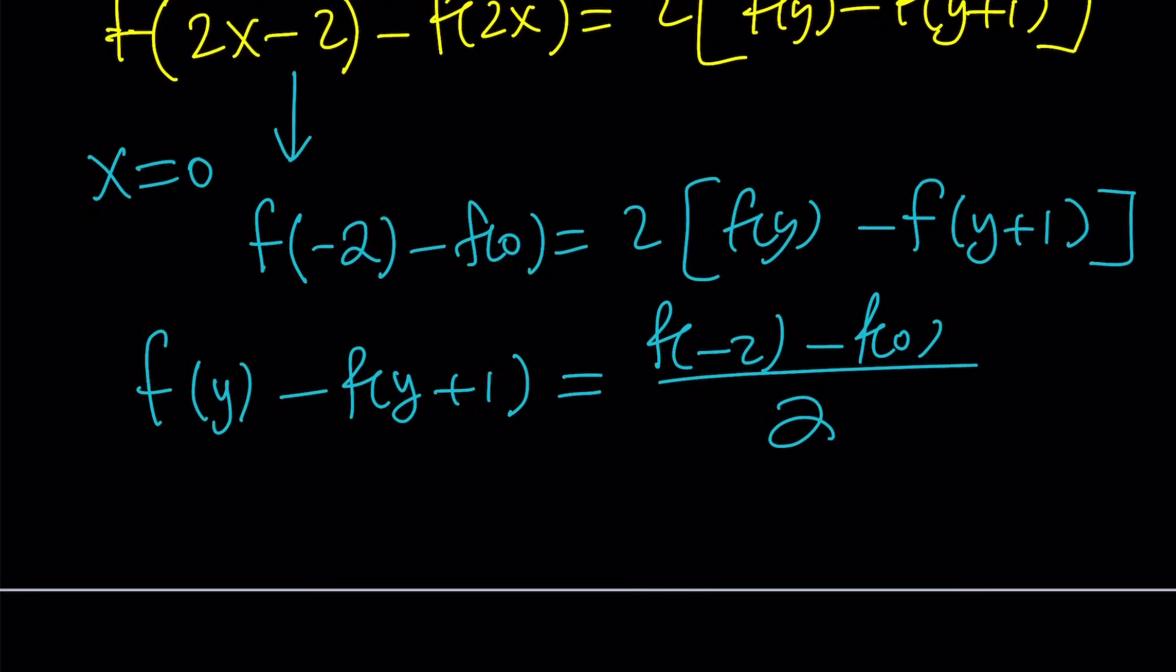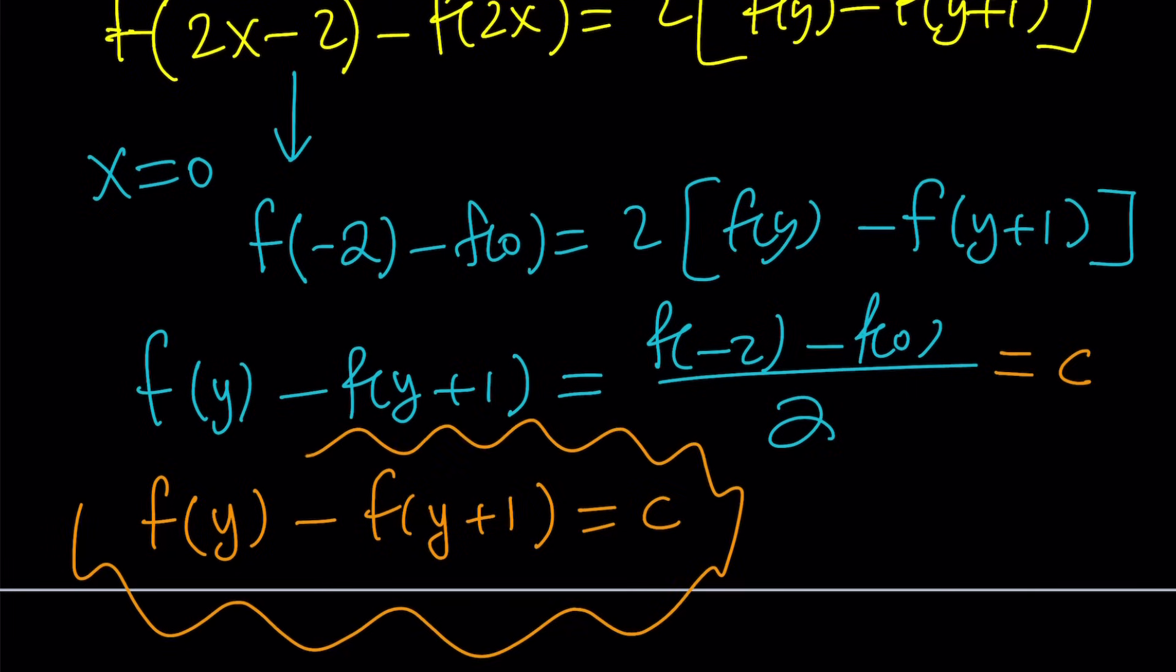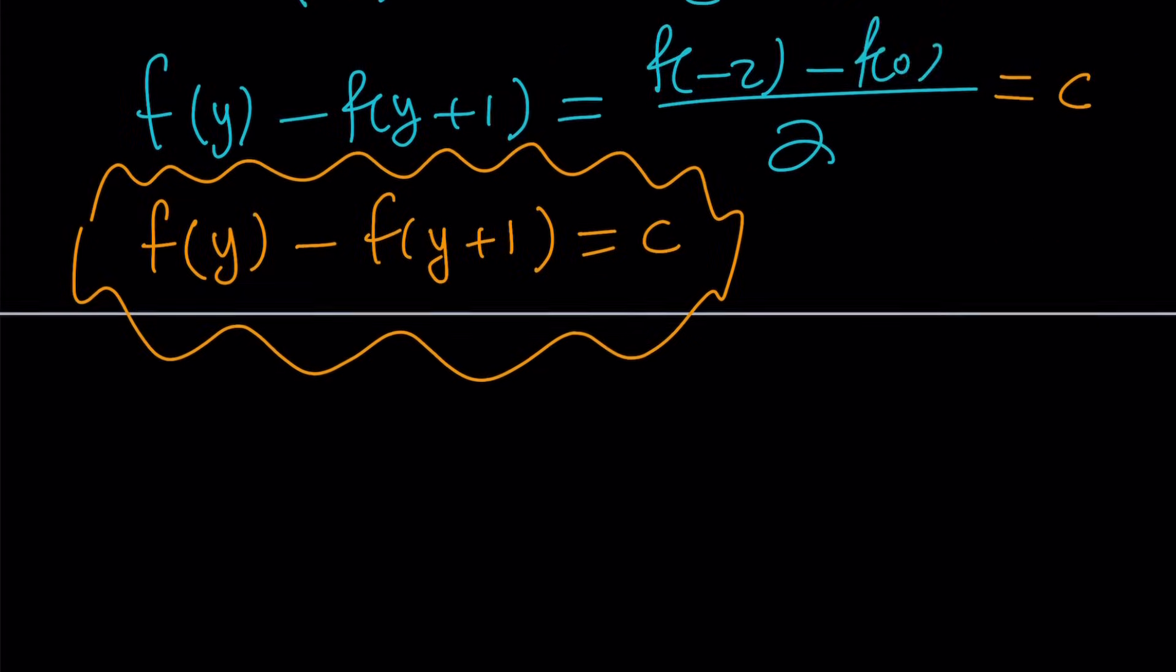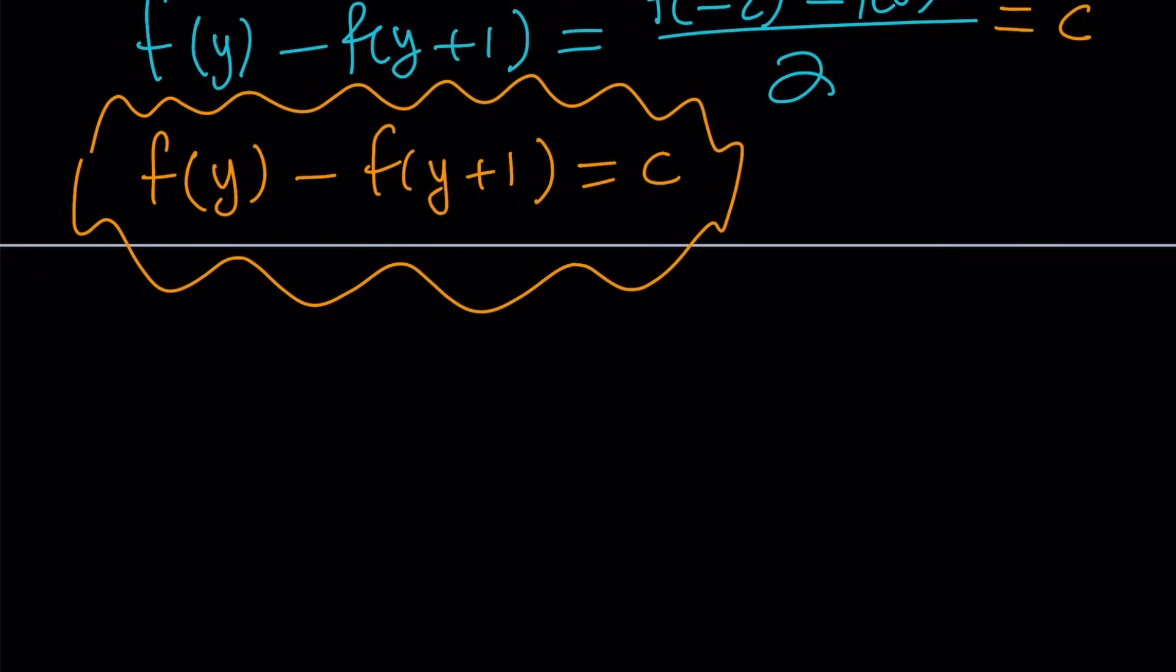Let's set it equal to c. So from here, hopefully you see what I see. f(y) - f(y+1) = c. And you know what that means? If this function is defined over integers, this means that it's a linear function. You couldn't say that with reals.